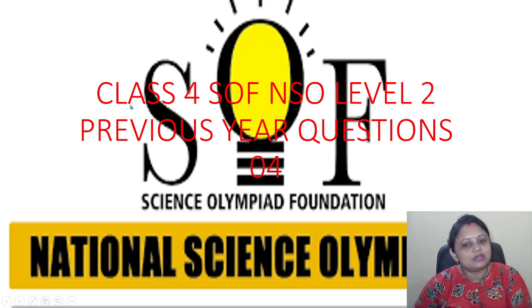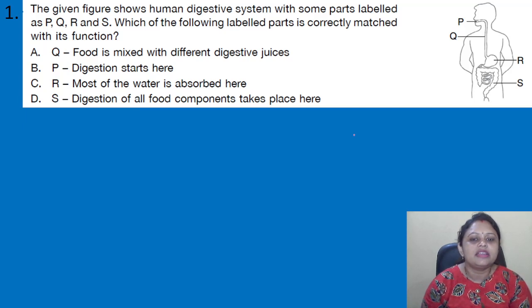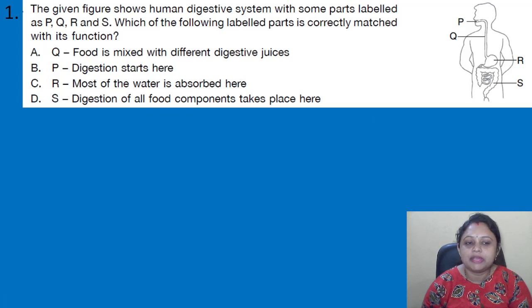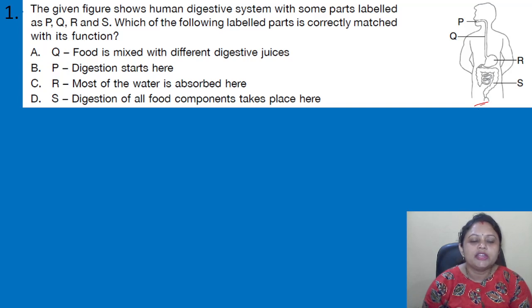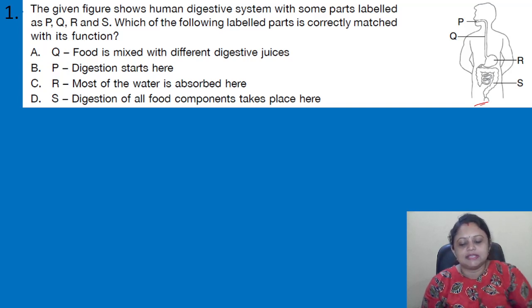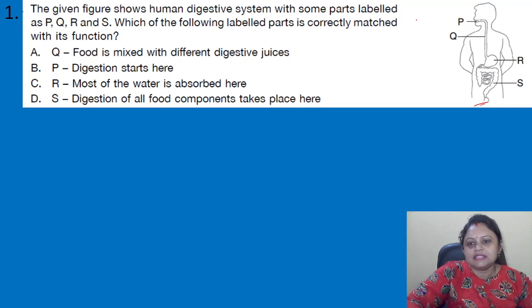Are you ready for it? Yes, so let's get started. Our first question: the given figure shows the human digestive system with some parts labeled as P, Q, R, and S. Which of the following labeled parts is correctly matched with its function? The options are: A) Q — food is mixed with different digestive juices; B) P — digestion starts here; C) R — most of the water is absorbed here; D) S — digestion of all food components takes place here.